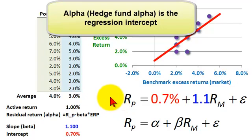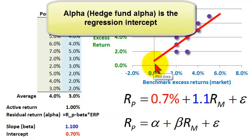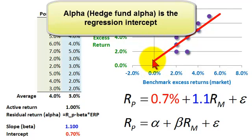Hi, this is David of Bionic Turtle with an illustration of alpha, or what is oftentimes called hedge fund alpha. I'd like to illustrate that alpha is really just the regression intercept — right here, it's the intercept on the y-axis.